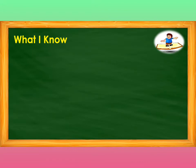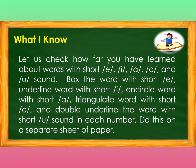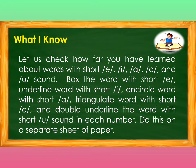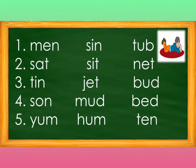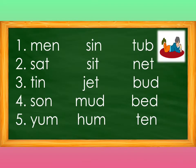What I Know. Let us check how far you have learned about words with short E, A, O, and U vowel sound. Box the word with short I, underline word with short E, encircle word with short A, triangulate word with short O, and double underline word with short U sound in each number. Do this on a separate sheet of paper. Here are the following words for number one.